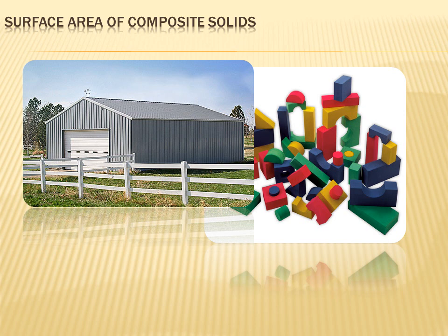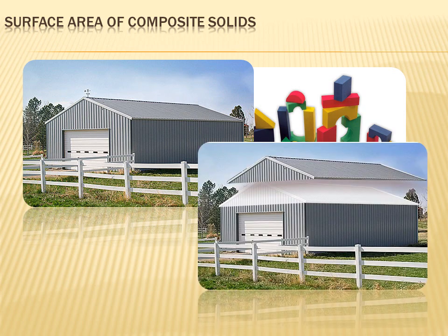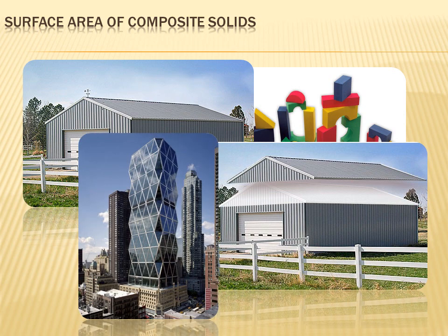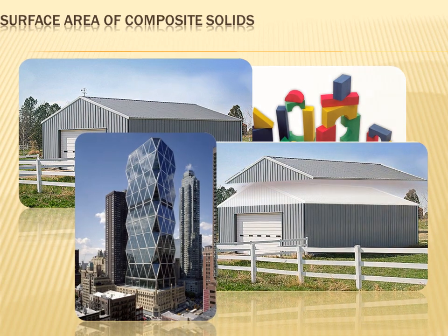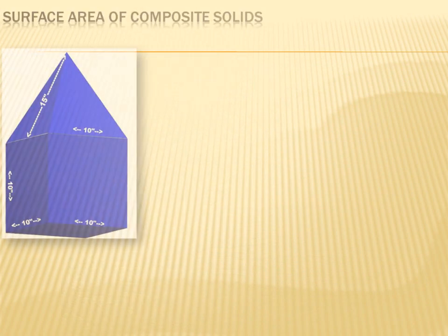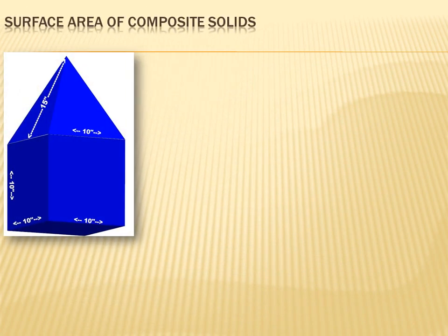Can you see those several figures? If we lifted the top part off of the bottom part, we'd have a triangular prism on the top and a rectangular prism on the bottom. We could figure out the surface area of each of those and total it, and we'd have the surface area of the composite figure.